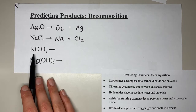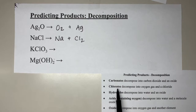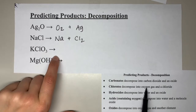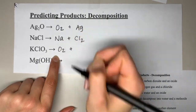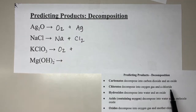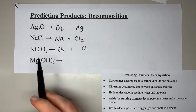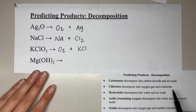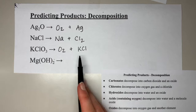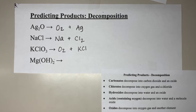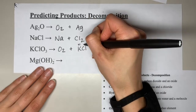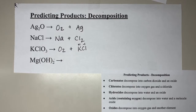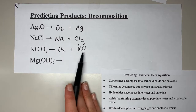Next we have potassium chlorate, which is on the reference sheet under chlorates. Chlorates decompose into oxygen gas — so that is one product — and a chloride. A chloride is something bonded to chlorine, so we take the metal, potassium, and bond it to chlorine to make a chloride. Since we made a new compound, we need to crisscross: potassium is +1, chlorine is −1 — equal and opposite, they cancel out. The products are oxygen gas and potassium chloride, KCl.